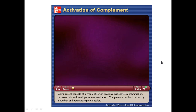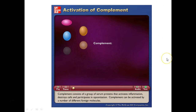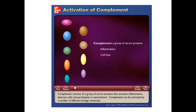That's what happens, but how does complement get activated? How do we get C3 broken into C3A and C3B, and C5 into C5A and C5B? Complement consists of a group of serum proteins that activates inflammation, destroys cells, and participates in opsonization. It can be activated by a number of different foreign molecules, and the proteins respond in a sequential cascade of reactions.